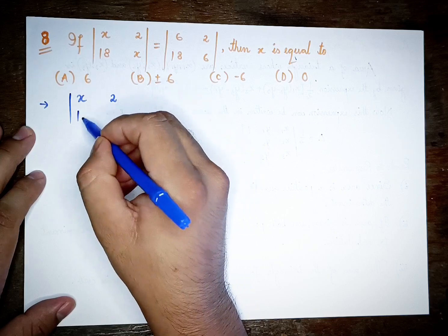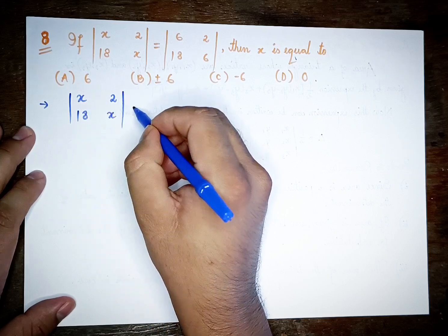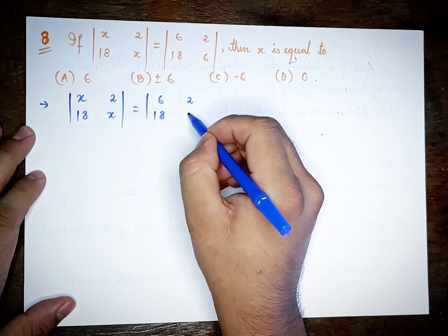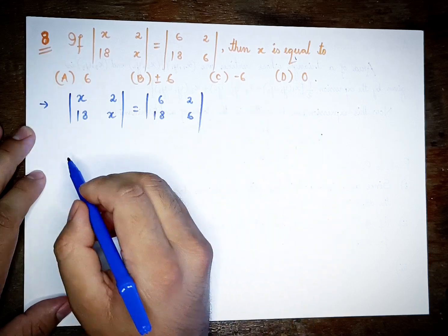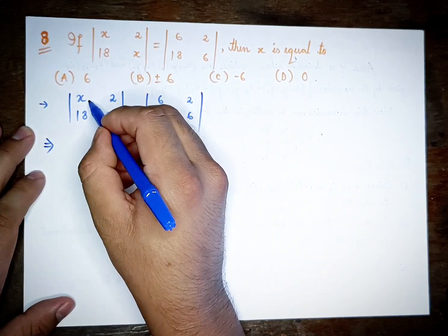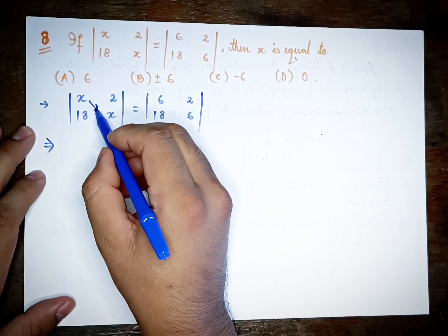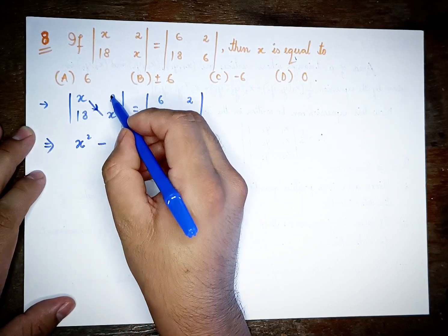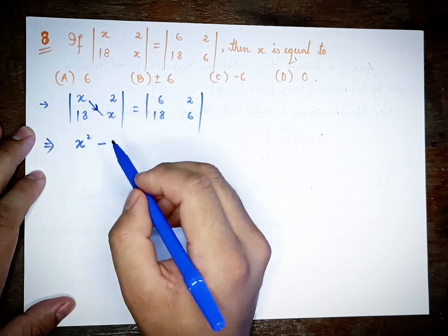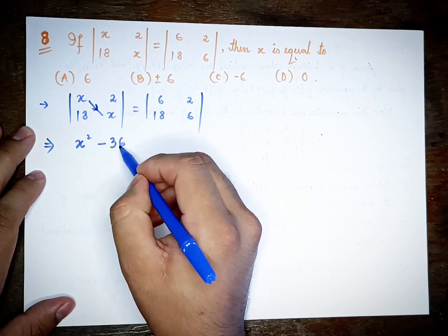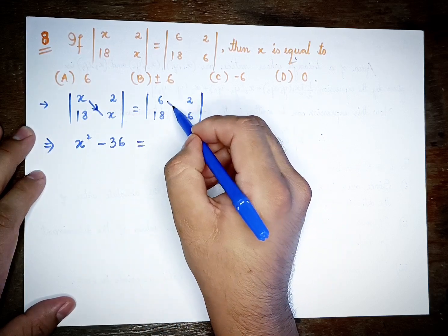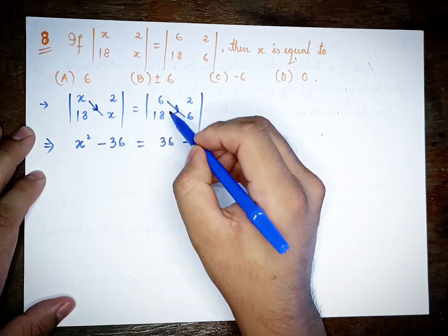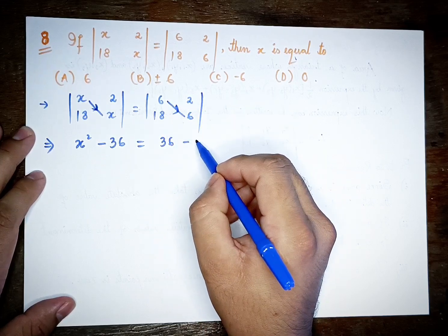The first determinant |x, 18x| expands to x squared minus 18x. The second determinant |6, 18x| expands to 6 times 18x, which equals 36 minus 18x, giving 36.